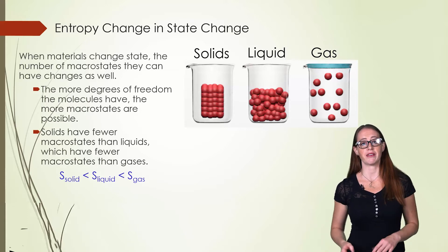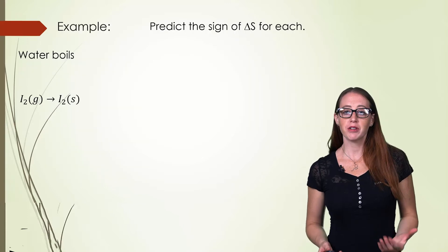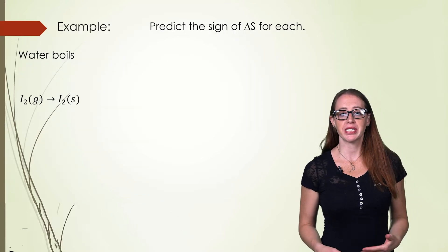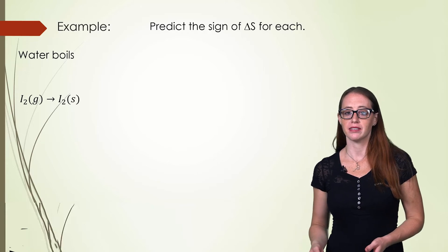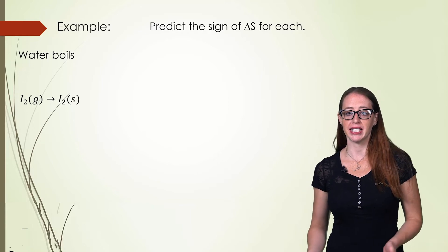Let's do some examples to make sure you have this concept down. For both of these cases, we are going to predict the sign of the entropy change. In the first one, we have water boiling. Pause and predict before continuing on with the video.